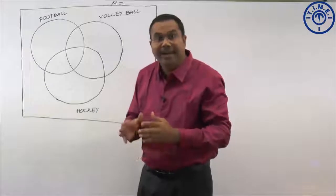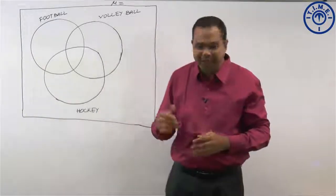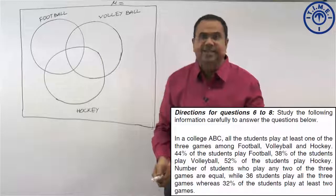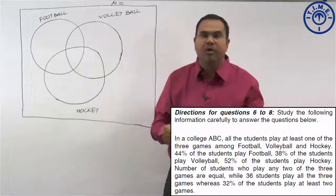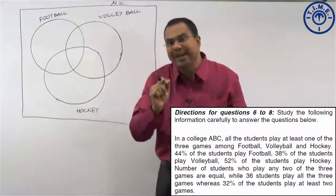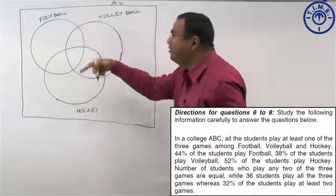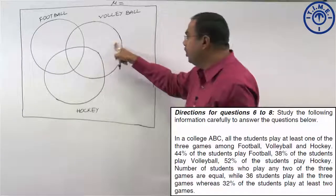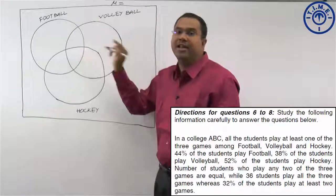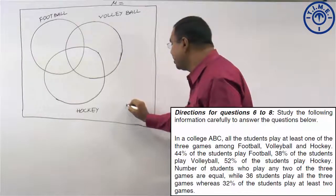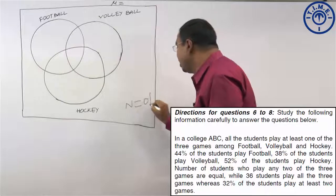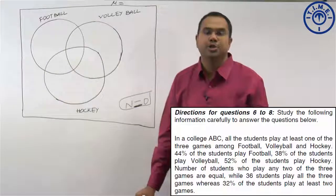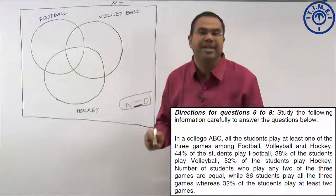After understanding this Venn diagram, let us represent the given information. In college ABC, all students play at least one of the three games among football, volleyball and hockey. At least one game means there may be students playing only football, only volleyball, only hockey, both games, or all three. So students who are not playing any game is zero.